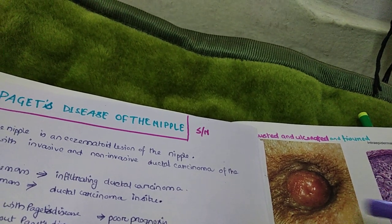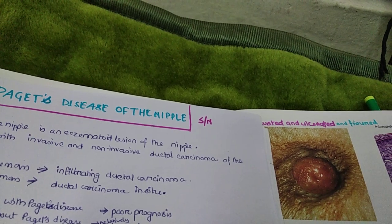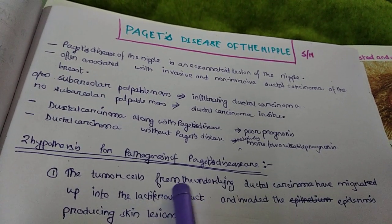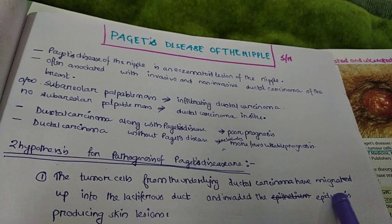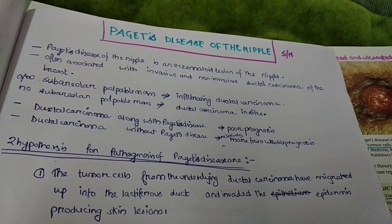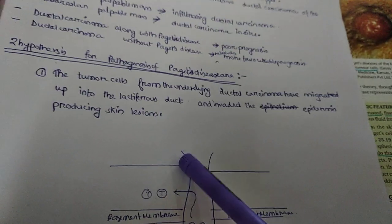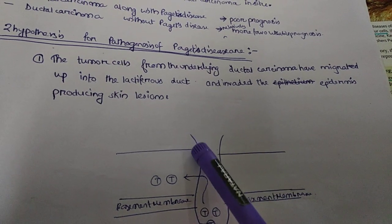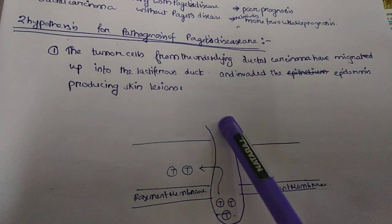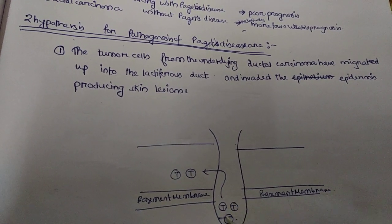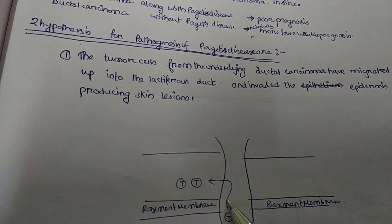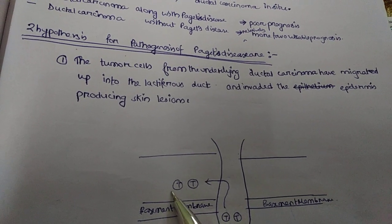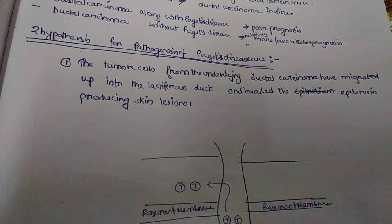There are two hypotheses for the pathogenesis of Paget's disease of the nipple. The first hypothesis states that tumor cells from the underlying ductal carcinoma have migrated up into the lactiferous duct and invaded the epidermis, producing skin lesions. You can understand this through the diagram: there is an underlying ductal carcinoma from which tumor cells migrate up into the lactiferous duct and invade the epidermis, producing skin lesions.